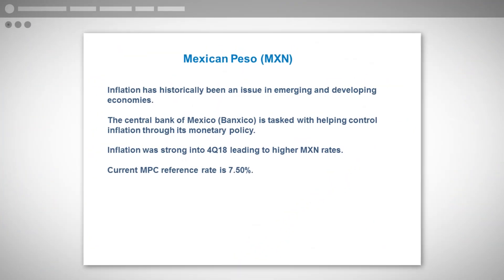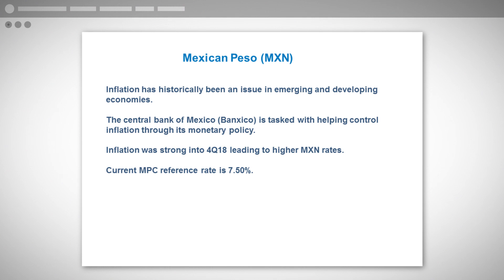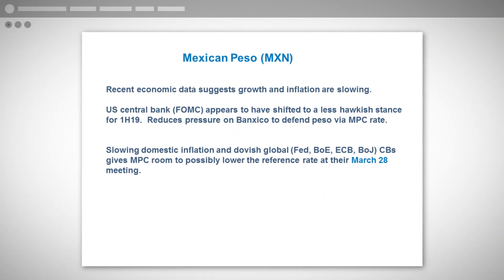Let's begin by considering the Mexican peso. Inflation has historically been an issue in emerging and developing economies, and central banks like the Central Bank of Mexico, also known as Banxico, are tasked with controlling rampant inflation through monetary policy. Most of last year in 2018, the Central Bank of Mexico was raising its rates along with the U.S. Fed. But beginning around the turn of the year going into 2019, that situation began to change, as recent economic data suggests both growth and inflation have been falling. The Fed appearing to shift to a less hawkish stance for the first half of this year has also reduced pressure on the Bank of Mexico to defend the peso.